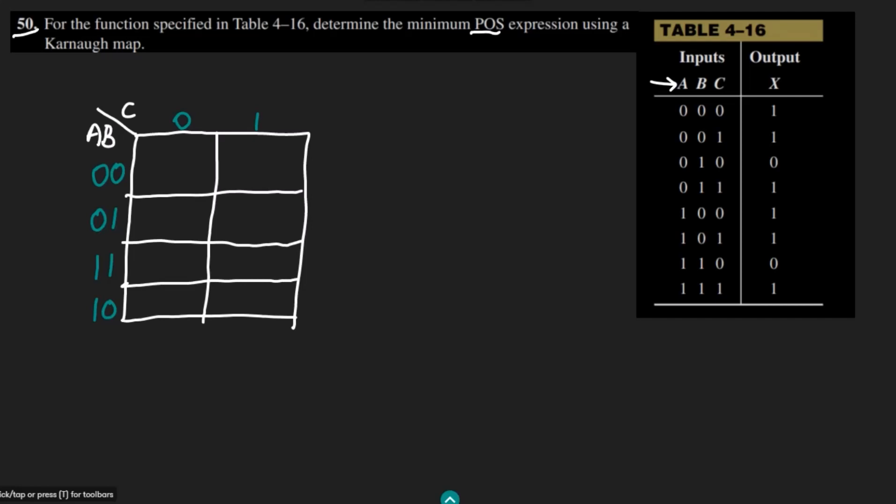What do I have to do here? I have to write the zeros for all the values where the output is 0. So here we have two outputs...